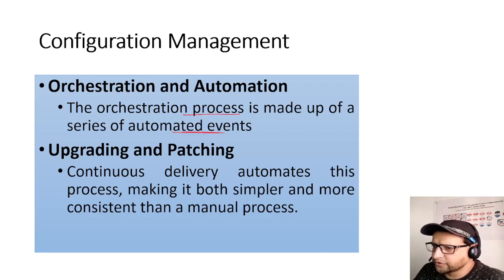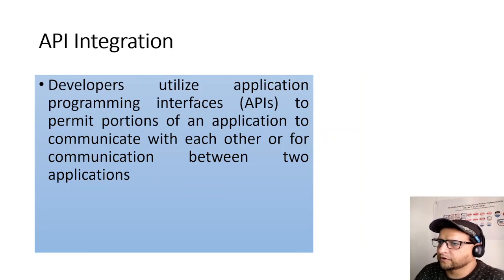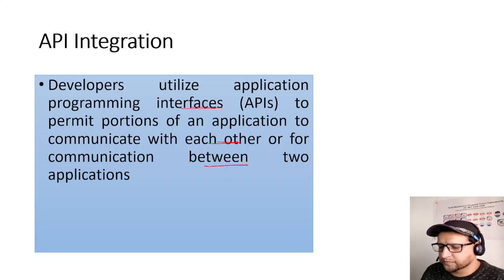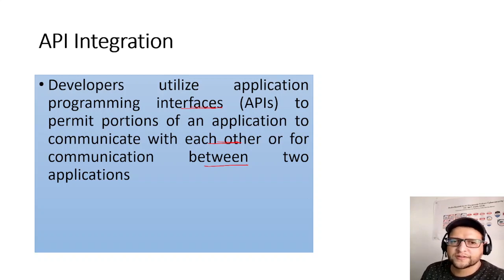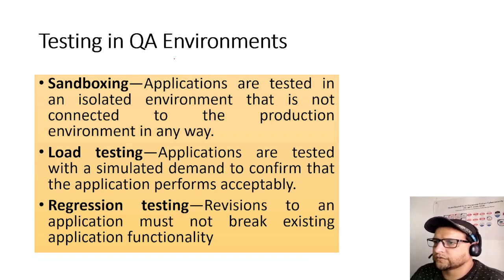Updates, upgrading, and patching: Continuous Delivery automates this process, making it simpler and more consistent than a manual process. API integration: developers use Application Programming Interfaces to permit portions of applications to communicate with each other — acting as a gateway between two applications. For example, when you check the weather on your phone, the app uses an API at the backend to fetch and display that data.